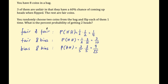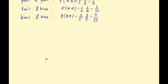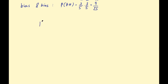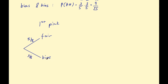Now let's build the tree diagram for the probabilities of getting each coin combination. On the first pick, the two branches are: picking a fair coin or picking a biased coin. With five fair coins and eight total, the probability of a fair coin first is five out of eight, and the probability of a biased coin first is three out of eight.